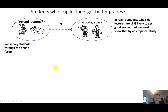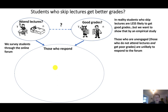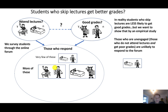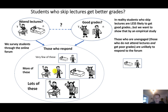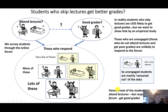So we survey students through the University Online Forum. The problem is that those who are unengaged — meaning those who don't attend lectures and get poor grades — are the ones who are unlikely to respond. So who responds? Very few of the unengaged students, more of those who attend or get good grades, and lots of those who attend lectures and get good grades. These unengaged students are mainly censored out of the data, which means most students who don't attend lectures but respond to the forum get good grades.